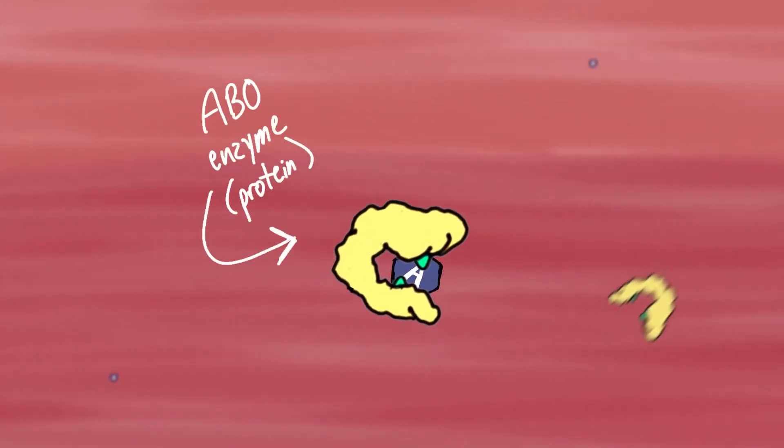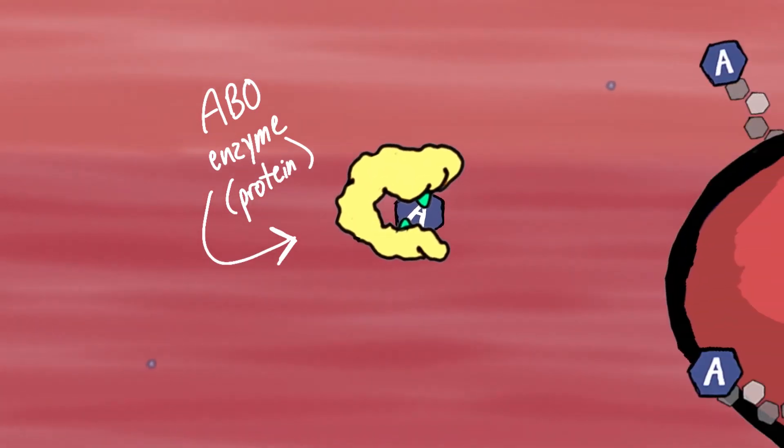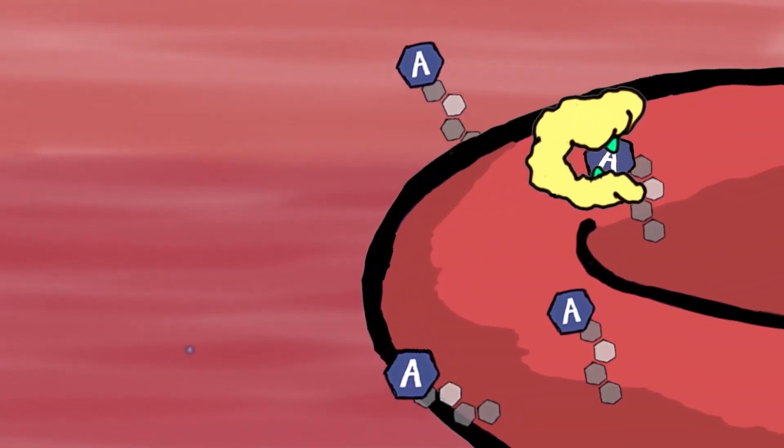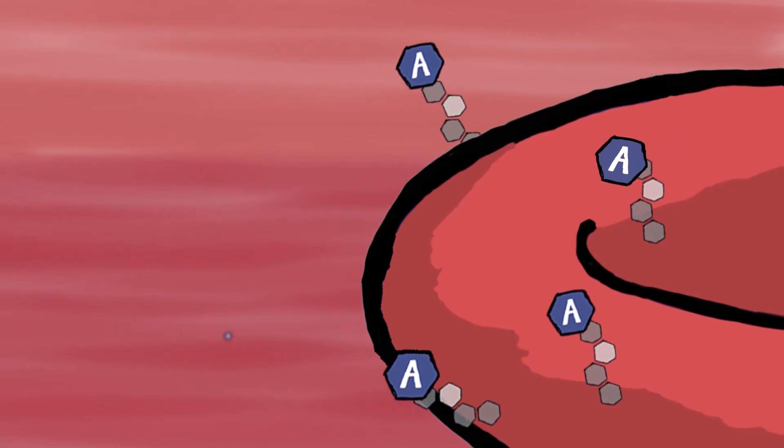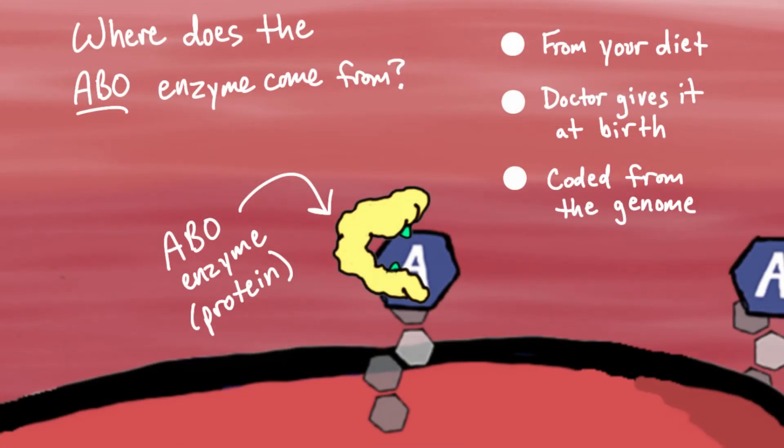Now the protein that modifies the carbohydrate is an enzyme, a protein itself. An enzyme is anything that catalyzes a biological reaction. So if you look and see this enzyme adding the A antigen, or the B antigen, or no antigen, where do you think this enzyme, this protein, comes from?